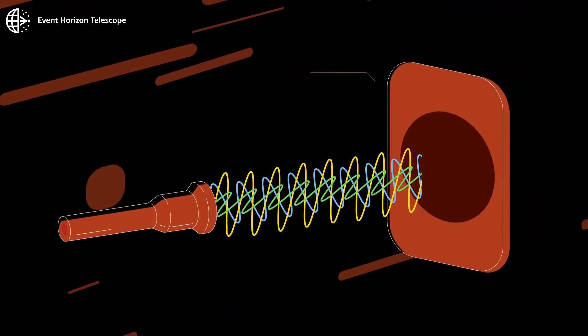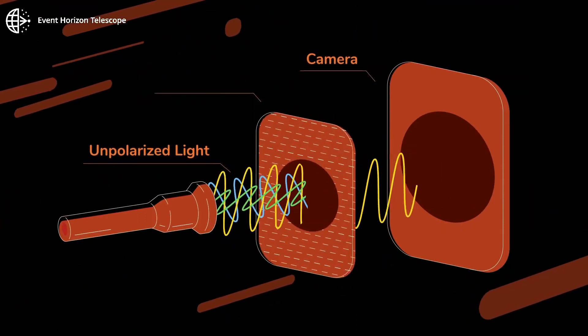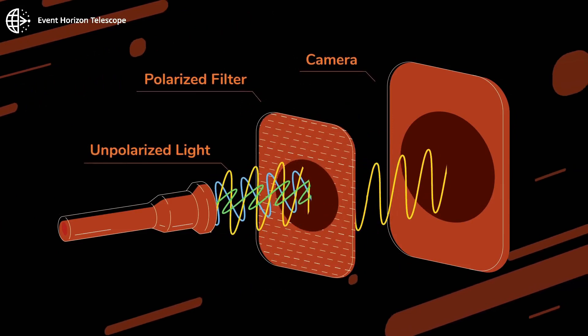Light produced by a torch is unpolarized. When we place a polarized filter in between, the light becomes polarized.